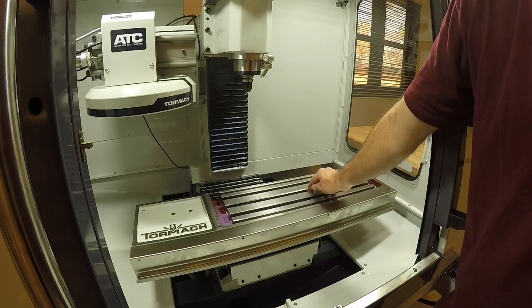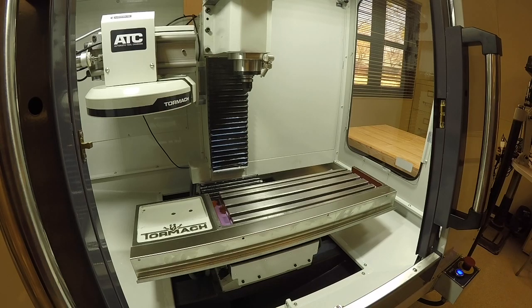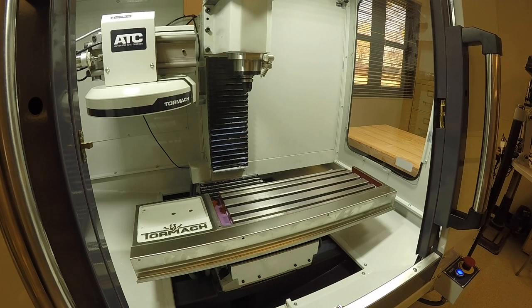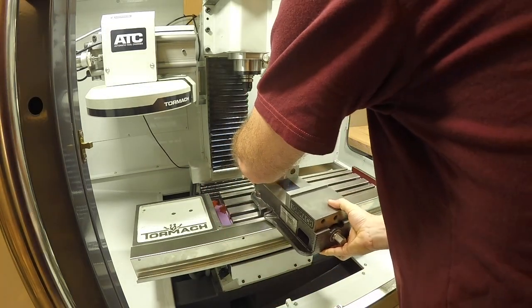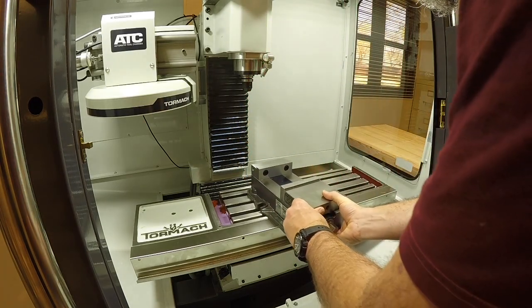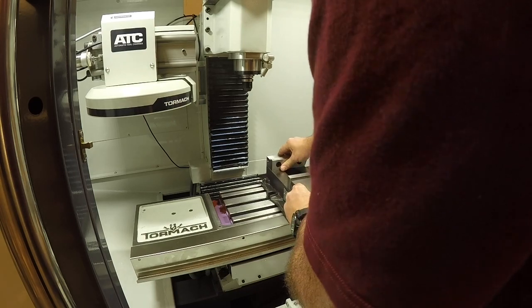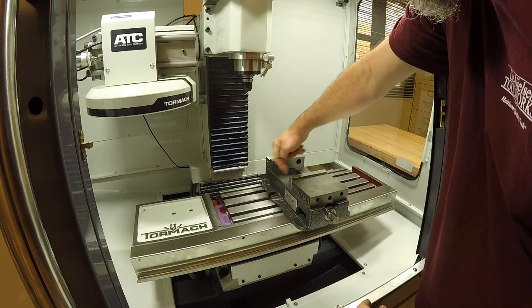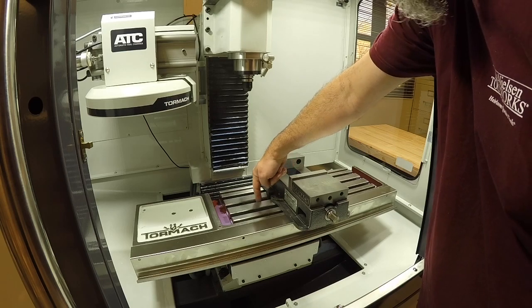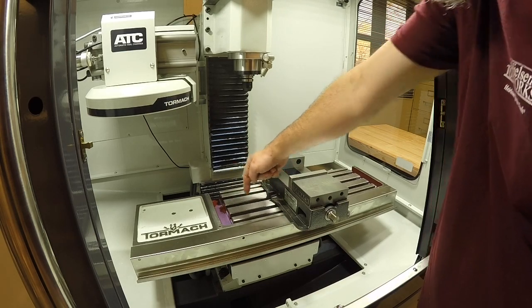Now I'm going to put the vise in here. The vise is really heavy. You've got to be careful when you lift it. Set it down gently on the table. Slide it into position where you want it. I want these notches - there's one on each side - I want them above the center slot.